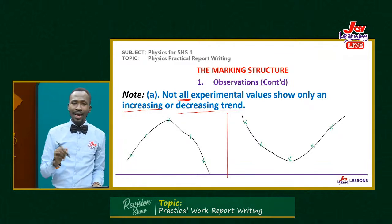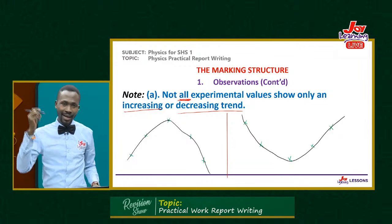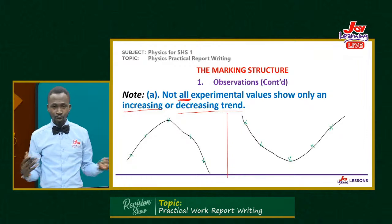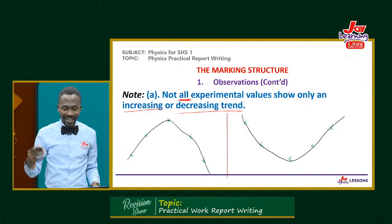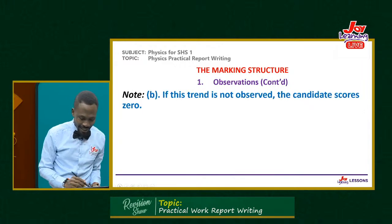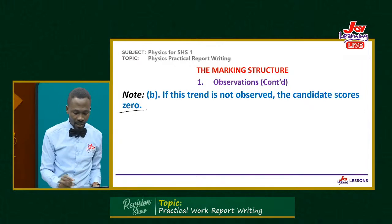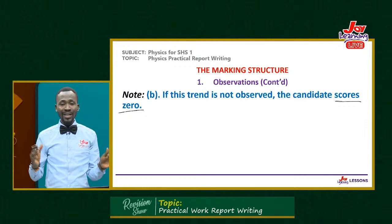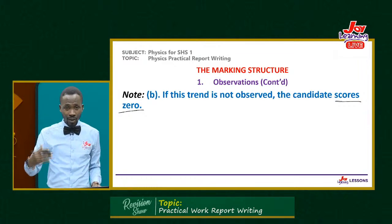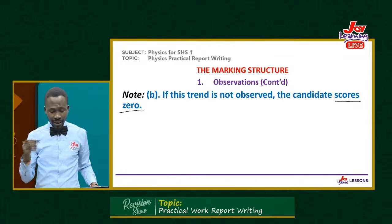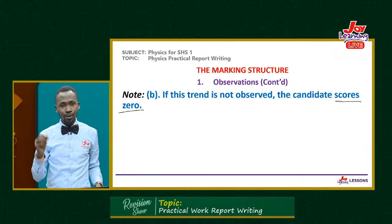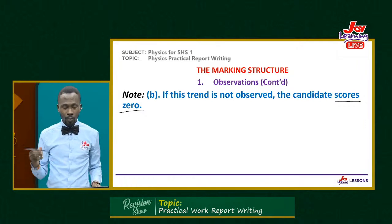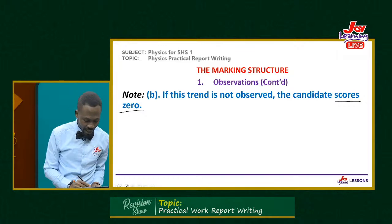You cannot have a high value, then a low one, then a higher one, then a lower one with no pattern — how would you draw a line of best fit or a curve? If you don't find a trend in your table values, the examiner will score zero for observations, and that is very bad — most of the marks are there. So please, make sure you find a trend.